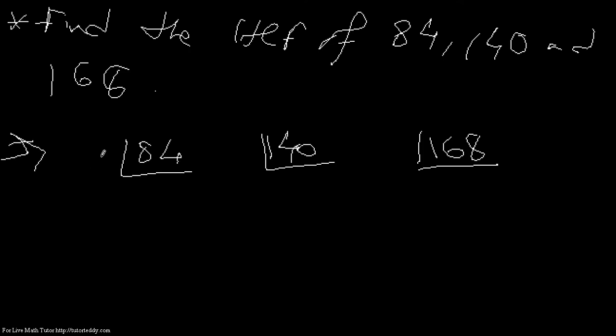So first let me start with the first one. Two fours are eight, two twos are four. Again divided by two. Two twos are four, two ones are two. This is an odd number so let me try with three. Yes, three sevens are twenty-one. And seven is a prime number so we can't divide it anymore.